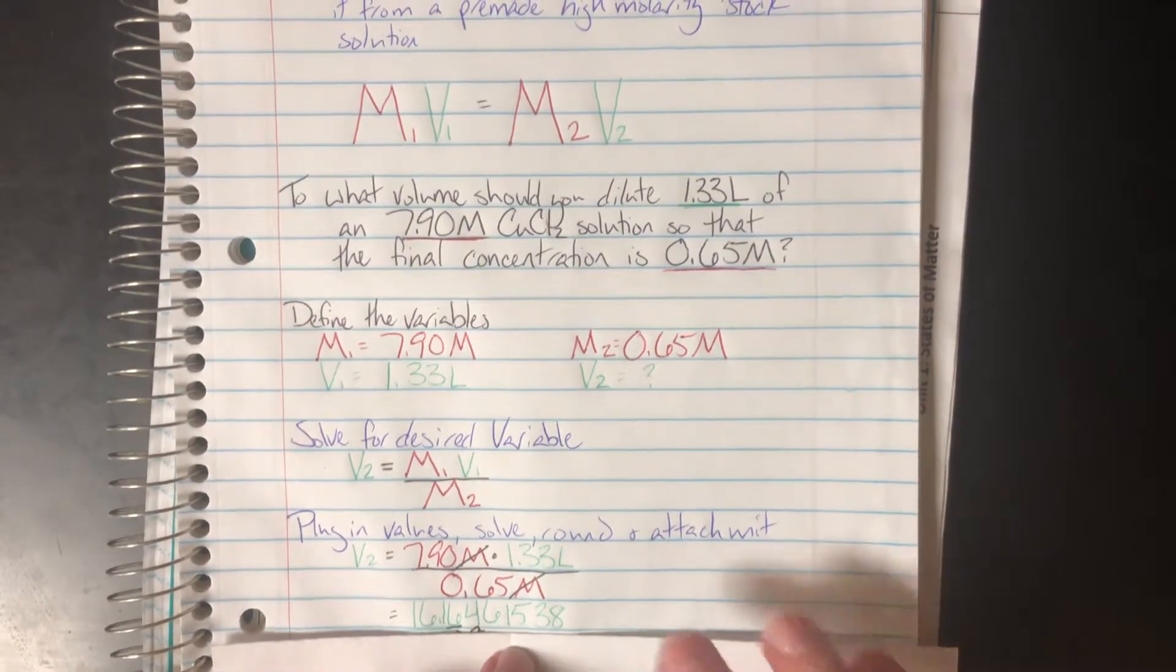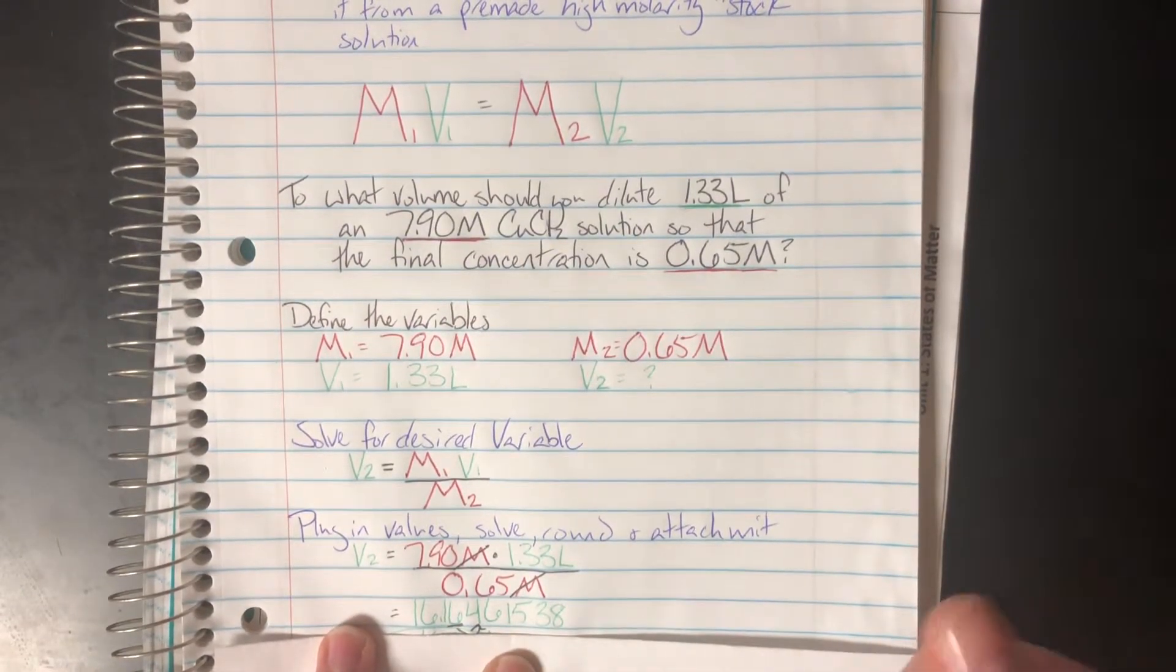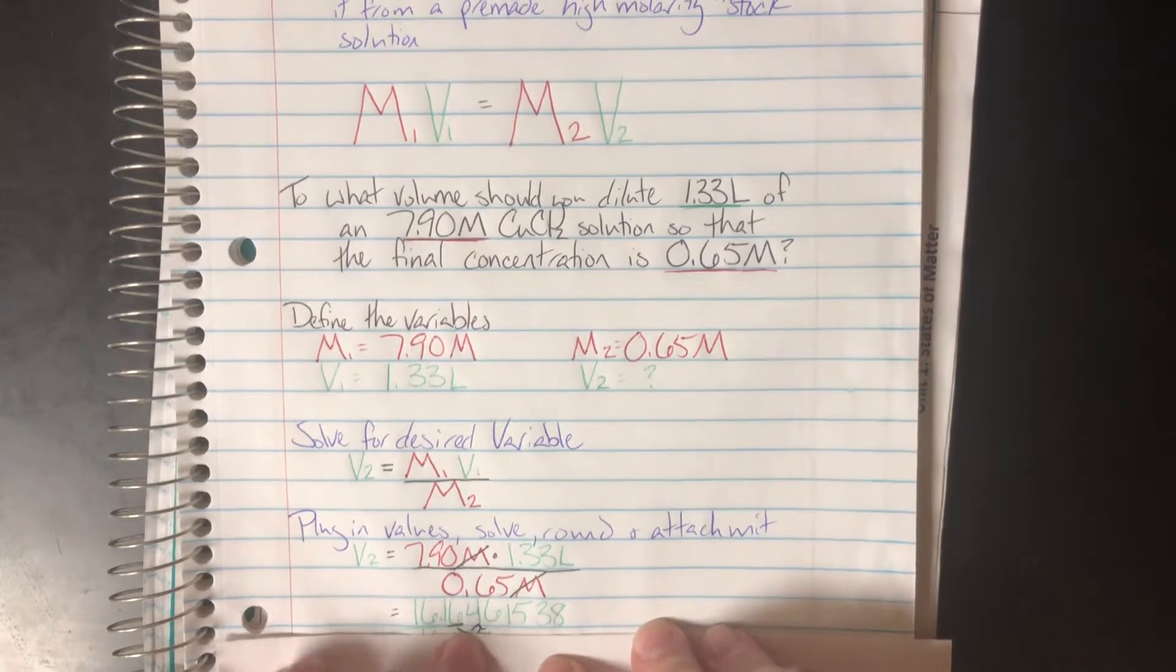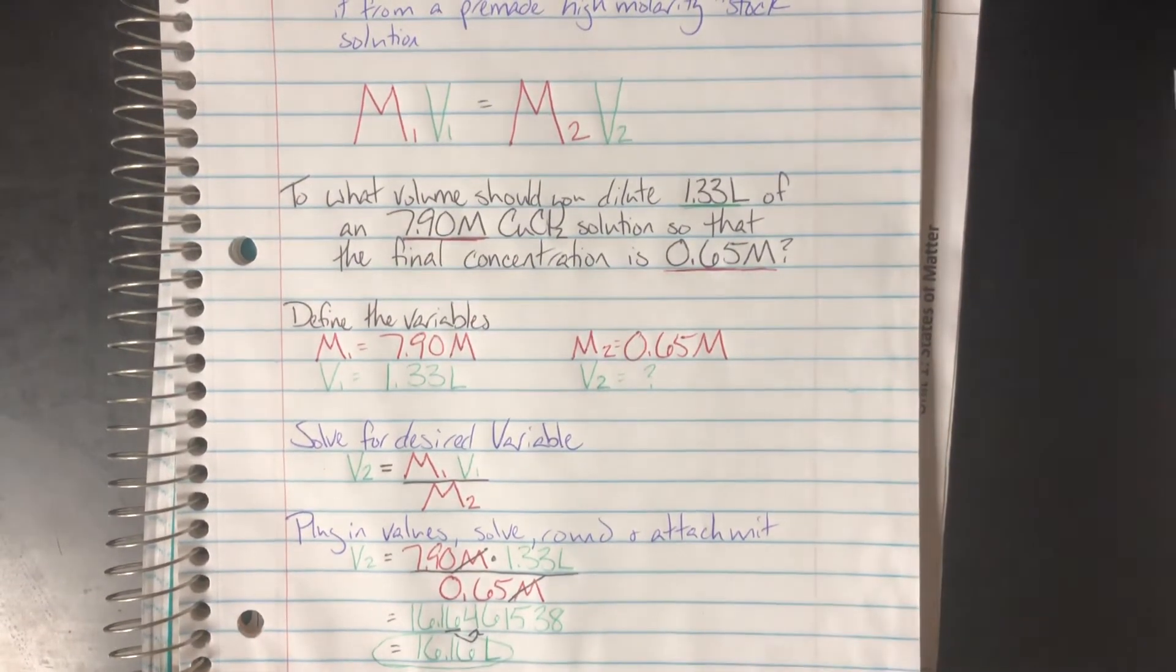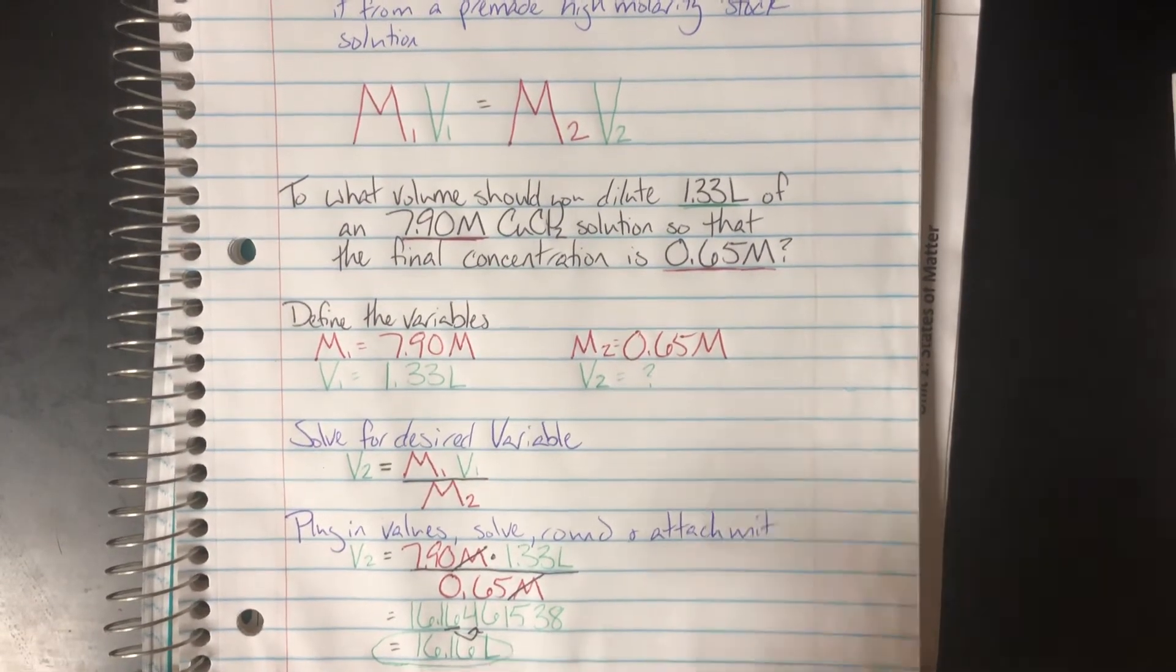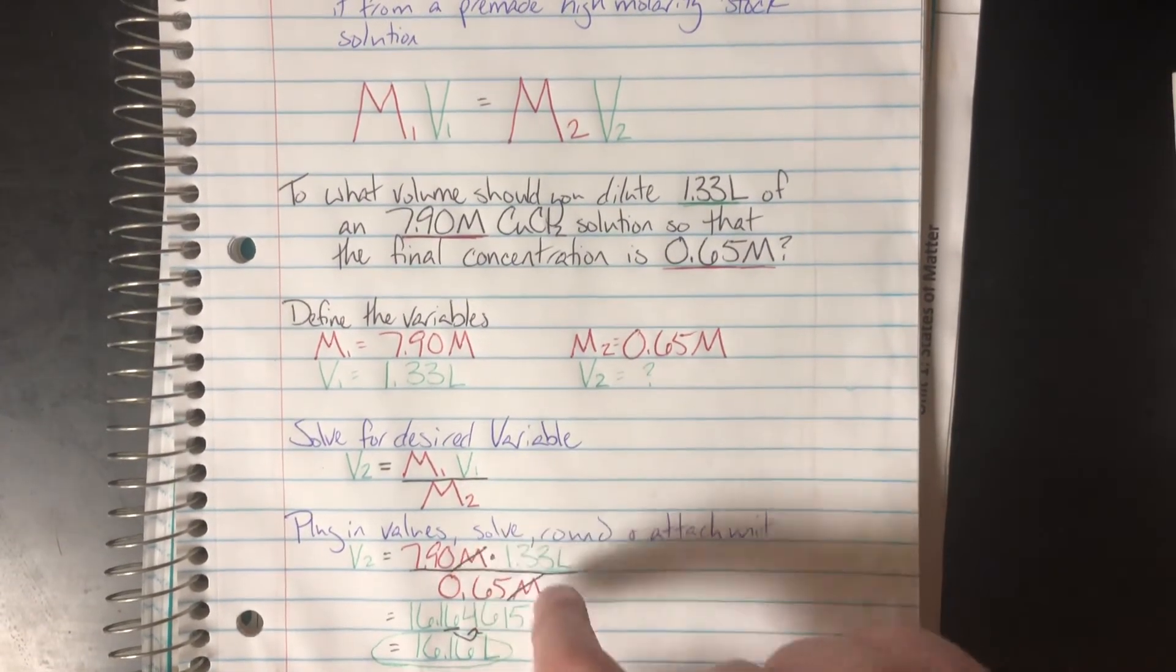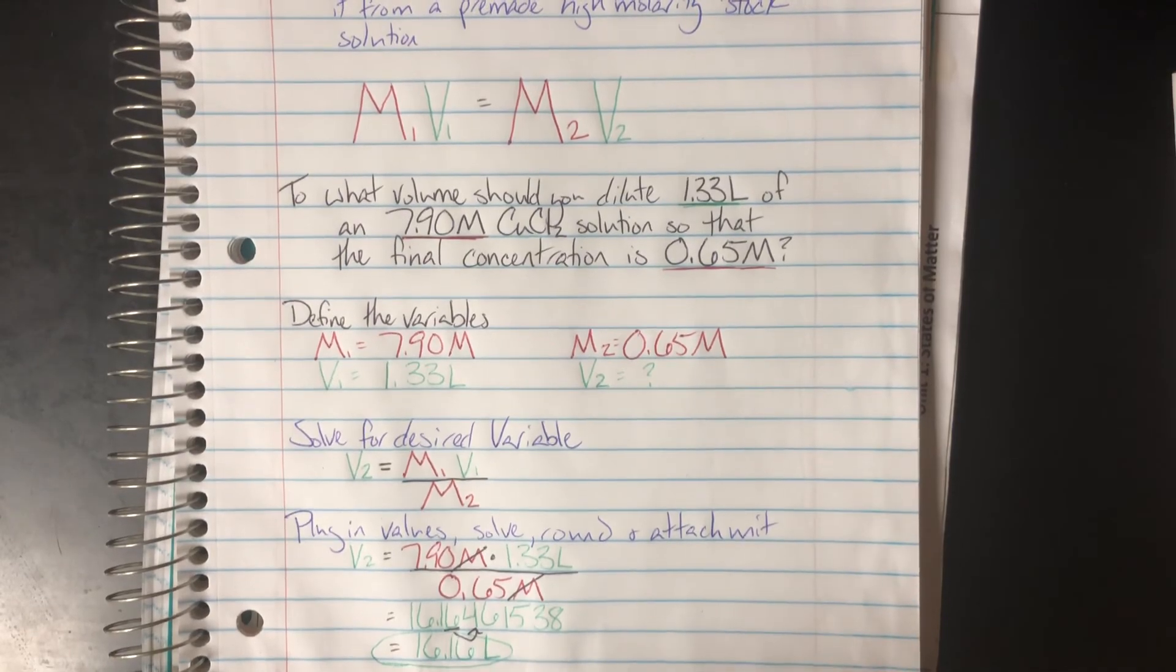That number is 16.16461538. That's a really long, gross number. I went ahead and I rounded it to two decimal places. Four did not make me round up, so I went ahead and kept it as 16.16, and I attached an appropriate unit. The only unit that was left in my math was liters, which is the unit that I went ahead and attached to my final answer.